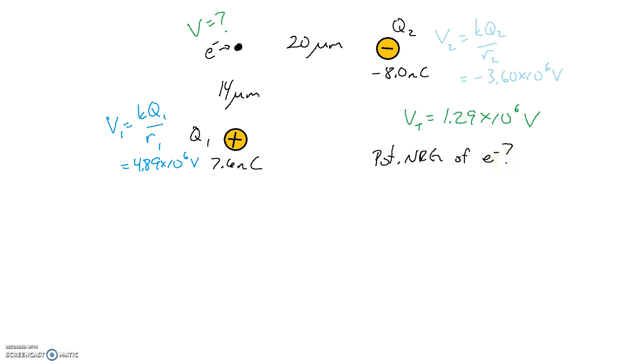Now, a really simple way to do that might be to find the potential energy, which of course is KQQ over R. And I can do that for Q1 and the electron, and then do that for the electron in Q2, and then take those two energies and put them together. But I don't need to do that, because that right there is the electric potential from each one of those charges. I've already done this part already. So an easier way to do it would be instead just use the expression energy is equal to QV.